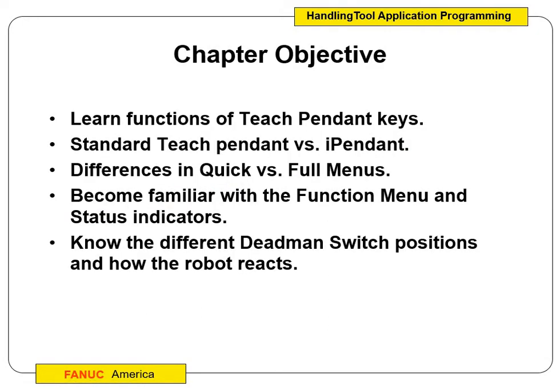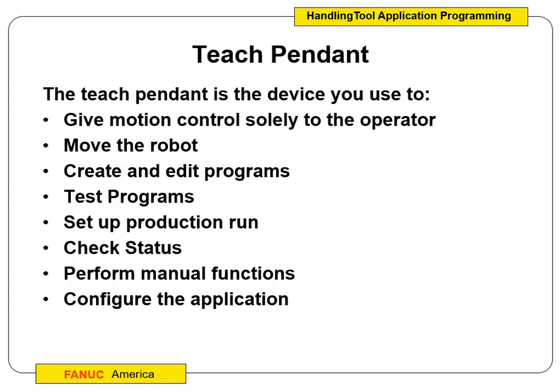We're going to be talking about the Teach Pendant itself. You might start seeing some questions that pop up that you need to remember for the final as well. In this chapter, we're going to talk about the Teach Pendant keys and what the standard Teach Pendant versus the iPendant is — the difference. We're taking a look at quick menus and full menus. Be very familiar with the function menu and what the status indicators mean, because we're going to be getting faults. Hopefully not all the time, but we've got to know how to get out of those faults. And we've got to know the different dead man switch positions and what happens when you do those. There's a soft spot on there that you've got to find — it takes a little getting used to.